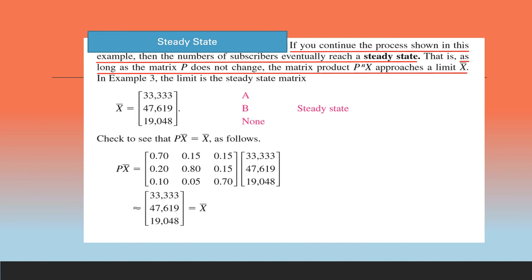Now, if we are continuing this process, then the number of subscribers eventually reach a steady state. That is, as long as the matrix P does not change, the matrix product P raised to N X approaches a limit X bar. We can easily get this result using a graphing calculator.